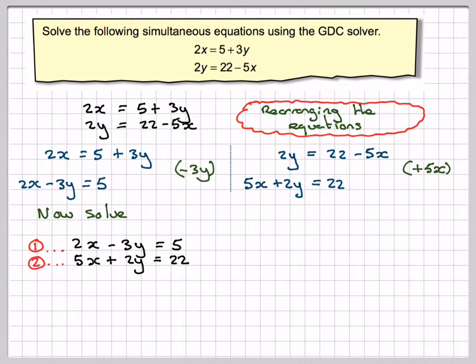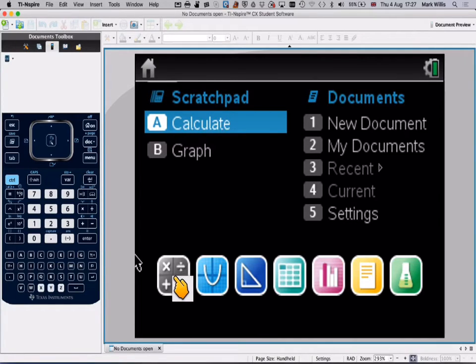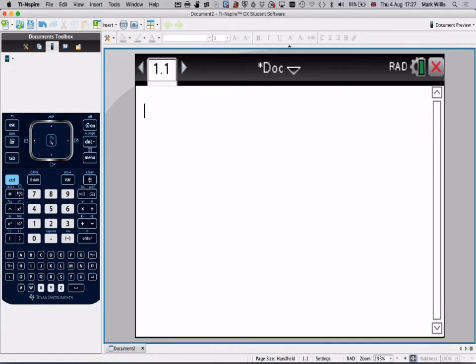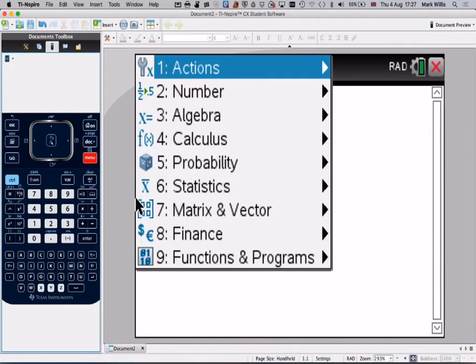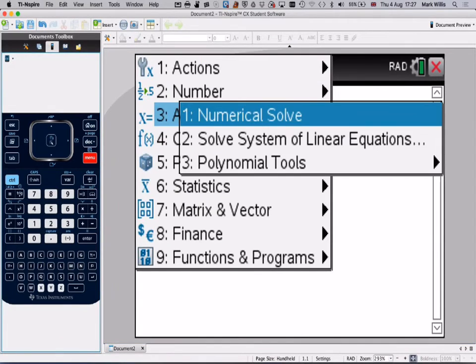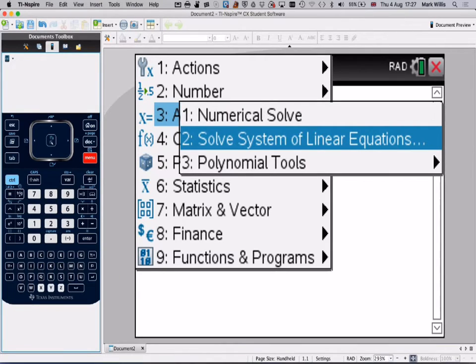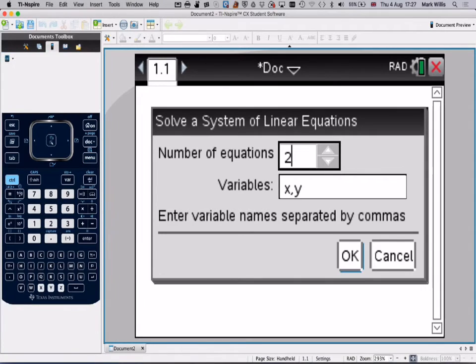And then we can go to our GDC. We'll go to the numbers thing first, and then we'll press menu, algebra, solve system of linear equations. OK, we've got 2 equations and 2 unknowns. You can actually change the variables, but it's not worth it. So we've got 2 equations and 2 variables. Press OK.